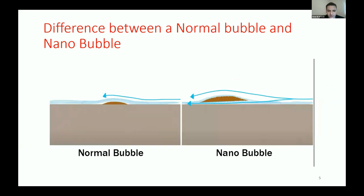Before going into what a nanobubble is, I would like to show you the difference between a normal bubble and a nanobubble. On the left of the screen we have a normal bubble with dirt shown in brown. A normal bubble will go above the dirt, but a nanobubble will go below the dirt. This is one of the applications of nanobubbles: removing dirt on surfaces and waste management.